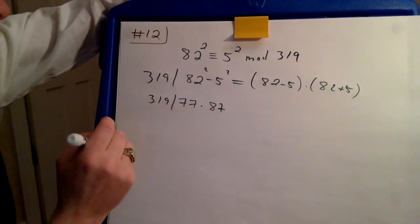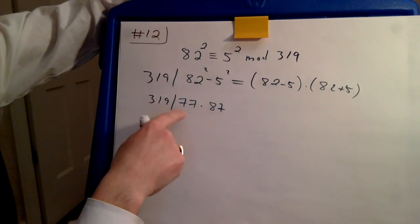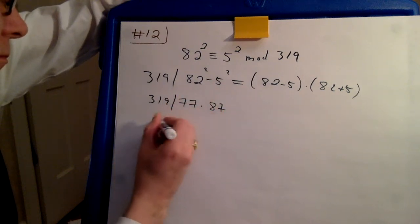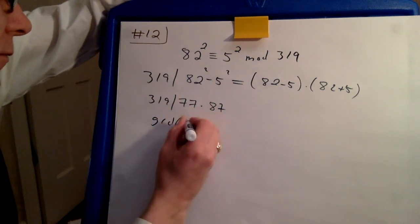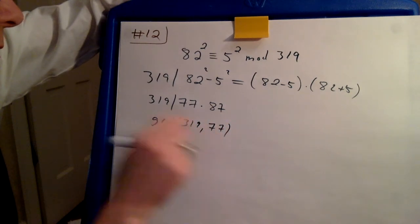So now clearly you see from this that 319 cannot be prime because it's much bigger than that. So we can compute what they have for common factors. So 319 and 77.